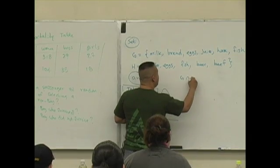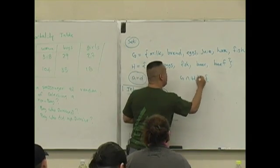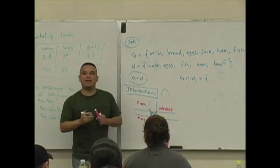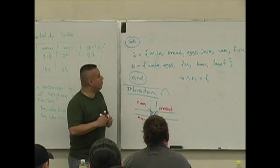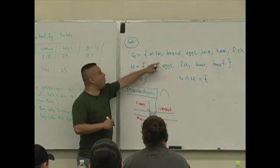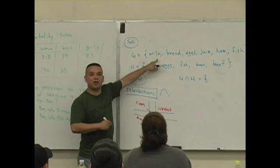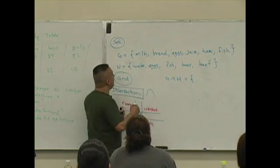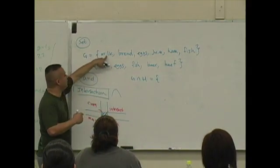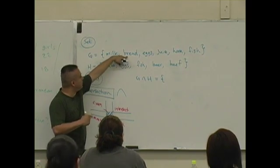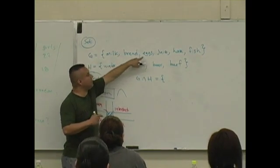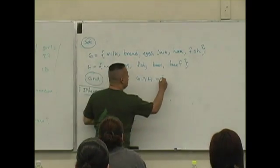What would that look like? Well, what items are in both? What items are in the intersection? Let's see. Is milk in both? No. Bread? No. Eggs? Yes, it is. It's in the... in what? Does it...